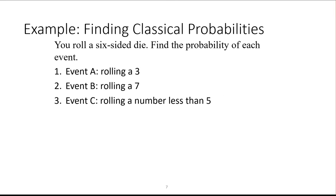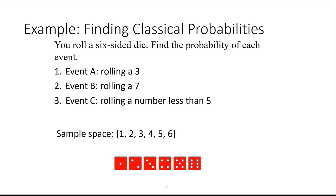Looking at rolling a die: the probability of rolling a 3 would be 1 out of 6 — there's one 3 out of the six total sides. The probability of rolling a 7 would be zero; you can roll the die all day but it's only going to give you 1, 2, 3, 4, 5, and 6 — it will never show a 7. The probability of rolling a number less than 5 — the numbers less than 5 on a die are 1, 2, 3, and 4, so we've got 4 ways out of 6. The sample space would be listing out 1, 2, 3, 4, 5, and 6.